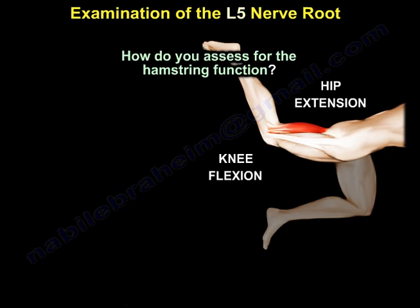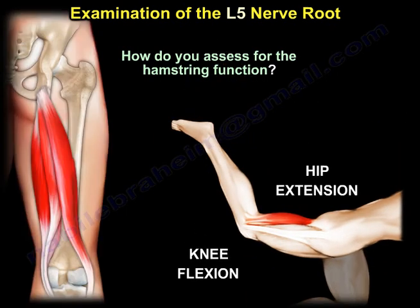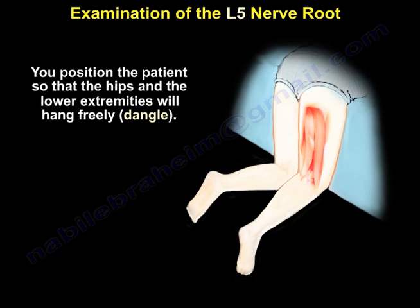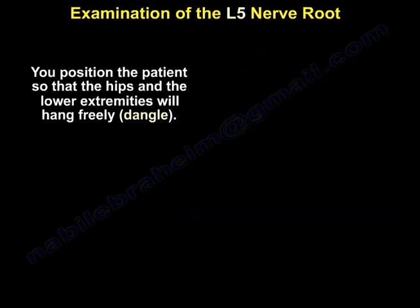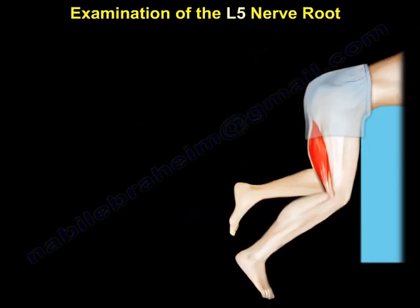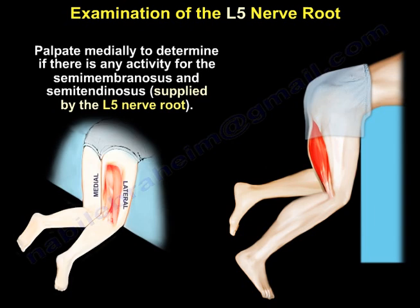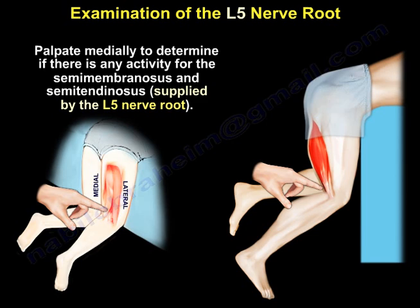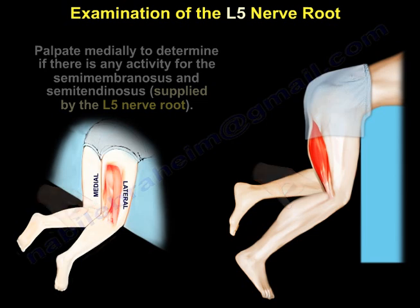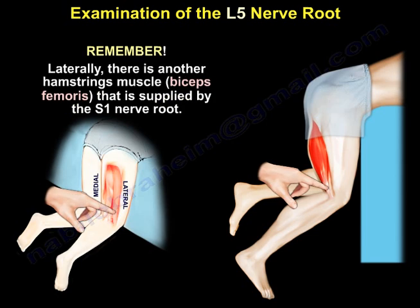How do you assess hamstring function? Position the patient so the hips and lower extremities hang freely and dangle. Ask the patient to flex the knees and determine if they can. Palpate medially to determine if there is activity in the semimembranosus and semitendinosus, which are supplied by the L5 nerve root. Remember, laterally there is another hamstring — the biceps femoris — but this one is supplied by the S1 nerve root.